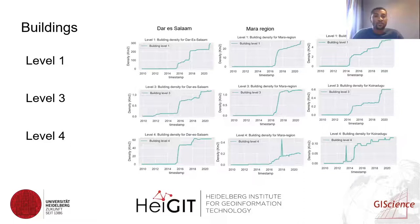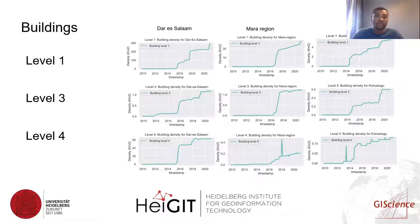The results for buildings — mapping at levels one, three, and four — overall show that the density decreases from level one to level four. Surprisingly, in Dar es Salaam, we witnessed that the elements mapped in level four were more than level three.